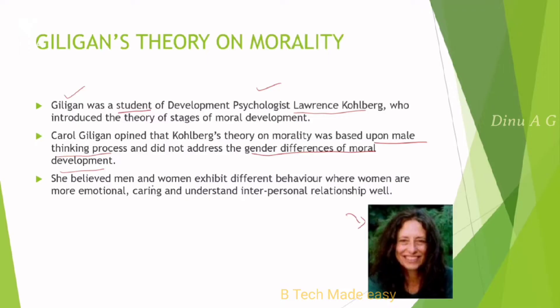Gilligan believed that men and women exhibit different behavior — women are more emotional, caring, and understanding of interpersonal relationships. These characteristics are included in her case for moral development theory, forming the basis of her alternative framework.